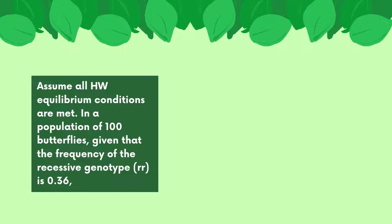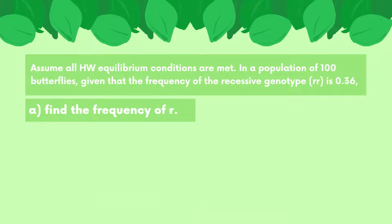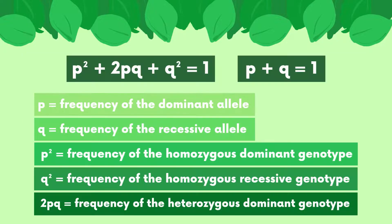Let's try an example problem using the same butterfly species. Suppose we're given that the frequency of the recessive genotype rr is 0.36. Using this, we're asked to find all the other frequencies, given that all the conditions of Hardy-Weinberg Equilibrium are met. For the first part, we must find the frequency of the little r allele. Since little r is the recessive allele, we know that we're looking for q.